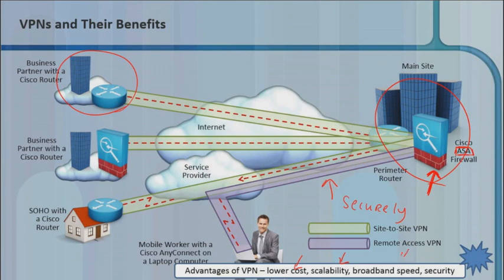Some other advantages: we get broadband speed — 500 megs or a couple gigs — versus those much slower speeds, and then of course security. Usually what we're going to do is set up some kind of logical tunnel that we send our traffic from one side to another, and as it goes over that tunnel, it's going to be encrypted and decrypted when it arrives.